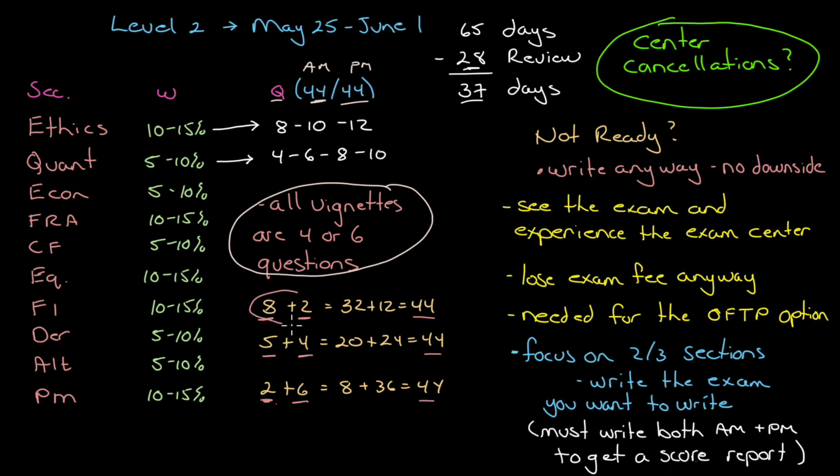And we can have eight vignettes of four points and two of 12 to get to 44. You can have five of four points and four of six, or you can have two of four and six of six to get to 44. Since there are 10 sections, this is the only one that actually has all 10. My leaning is towards eight vignettes of four questions each, two vignettes of six.